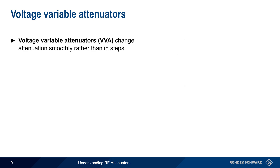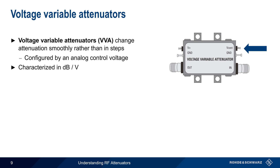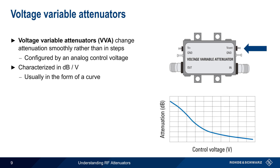Another type of attenuator is the voltage variable attenuator, which changes attenuation smoothly rather than in discrete steps. The amount of attenuation is configured using an analog control voltage, and is therefore characterized in units of dB per volt. Since this relationship may not be strictly linear, it's often given in the form of a curve. Voltage variable attenuators are most often used in applications like automatic gain control, calibration, etc., where the feedback or control signal is purely analog.